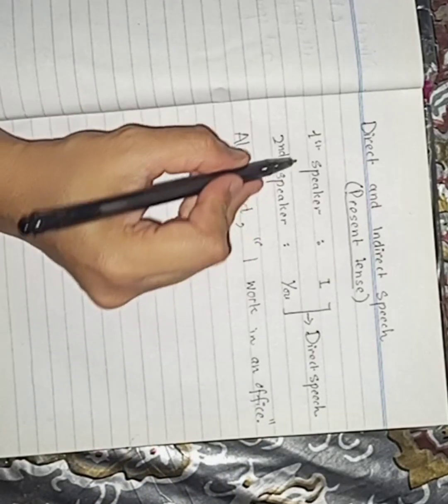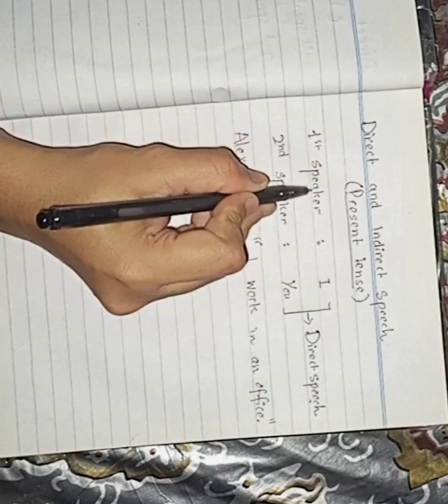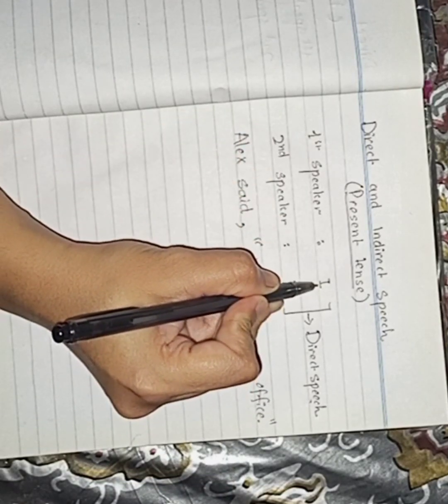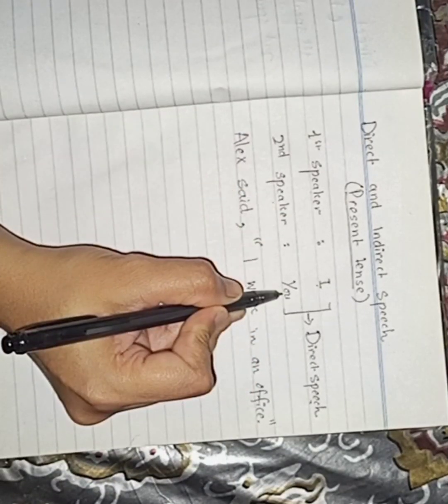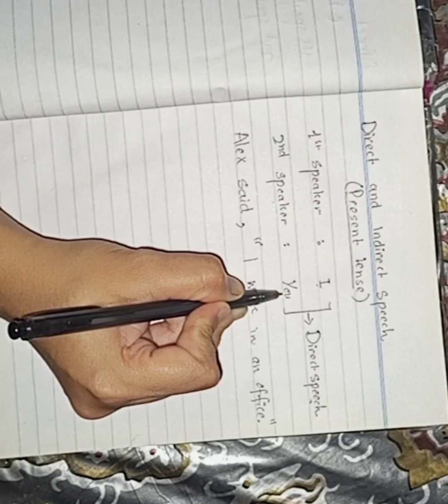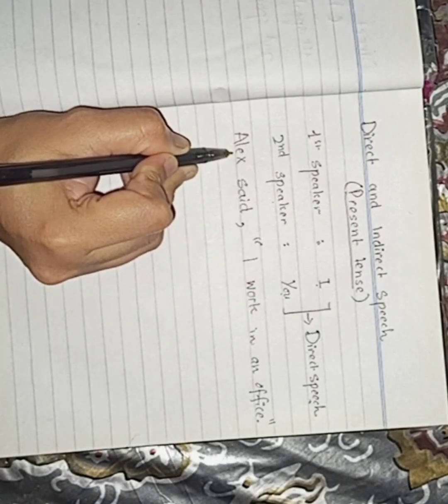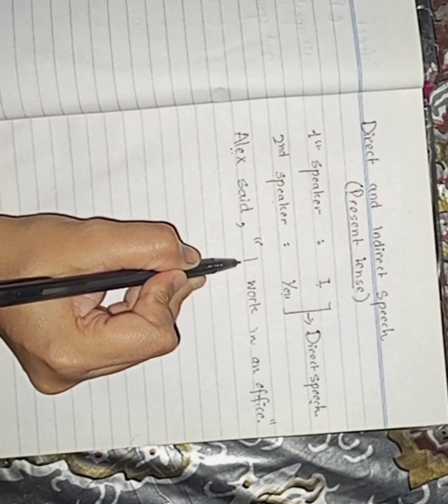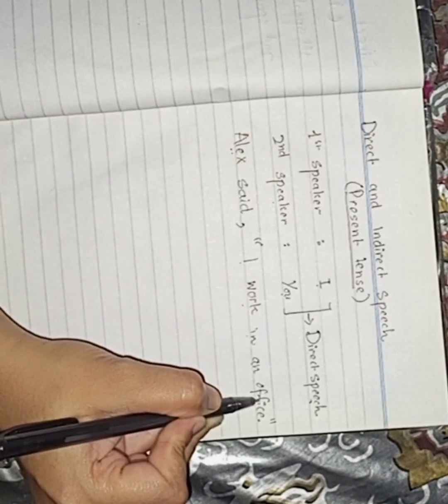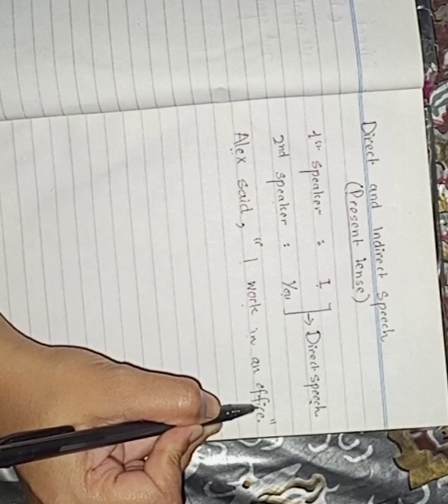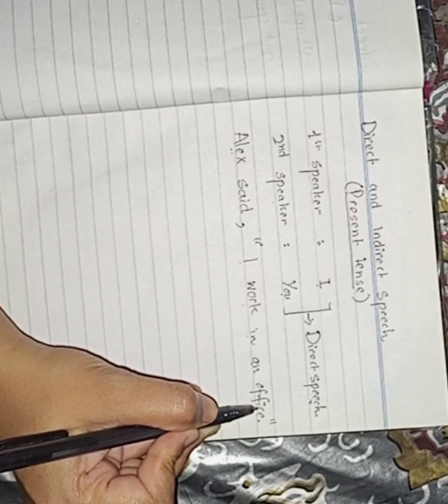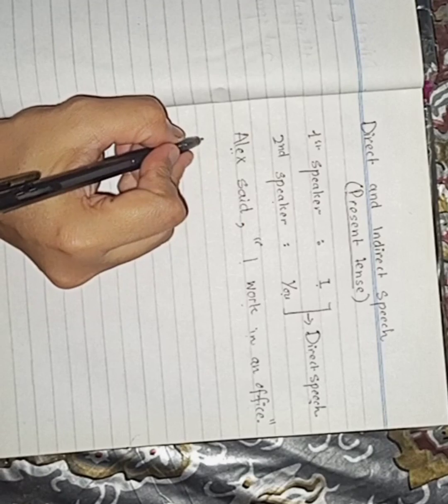Remember there is a rule that in direct speech, the first speaker always contains I and the second speaker always contains you. Now we have only one speaker, which is Alex. So for Alex, we use I work in an office and this is the sentence of present tense. Now we have to convert it into indirect speech. Let's convert.